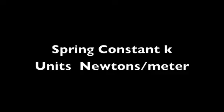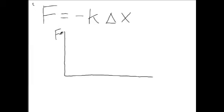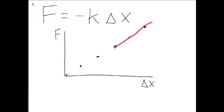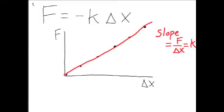The spring constant k of a spring is determined by the material that the spring is made of and the geometry or exact shape of the coil. The units for the spring constant are in force per unit length, typically newtons per meter. The force in a spring is proportional to the distance stretched, and if we make a graph of force versus distance stretched, we find a linear relationship and the slope of this line is our spring constant.